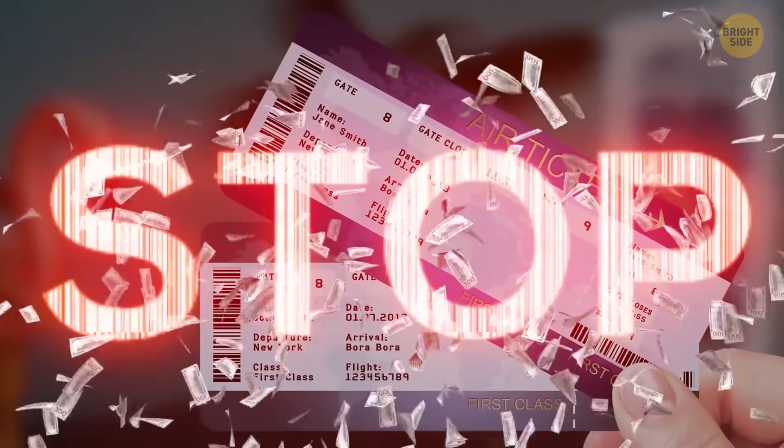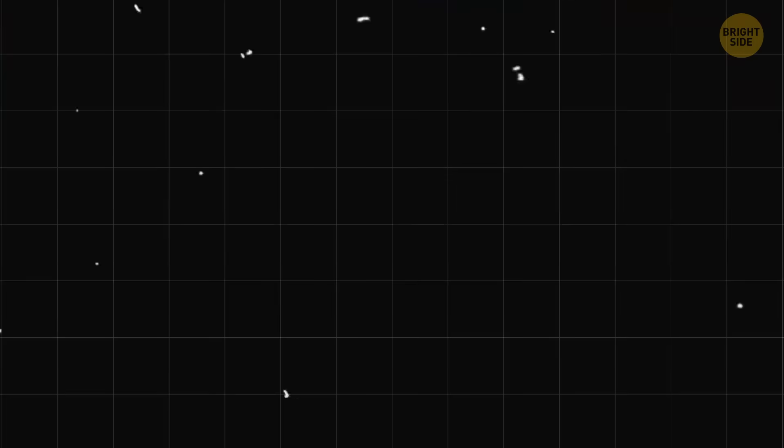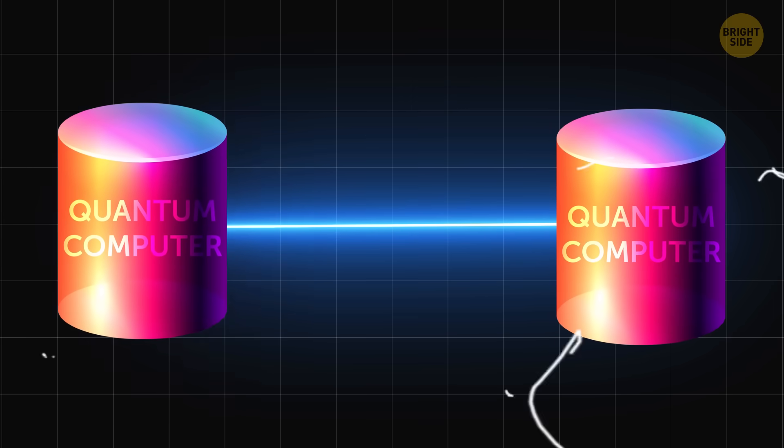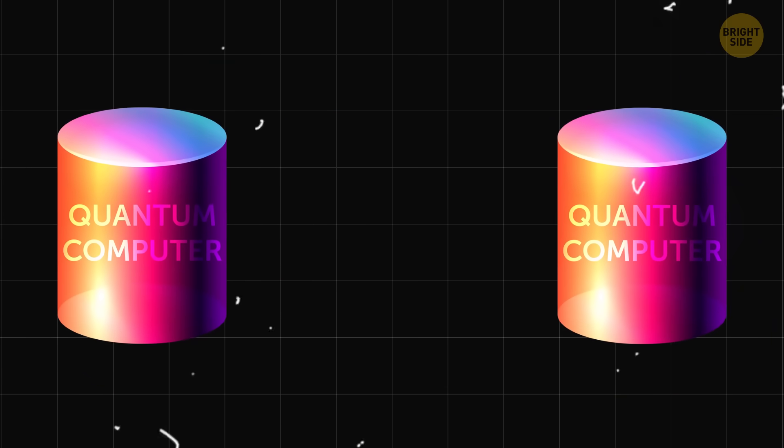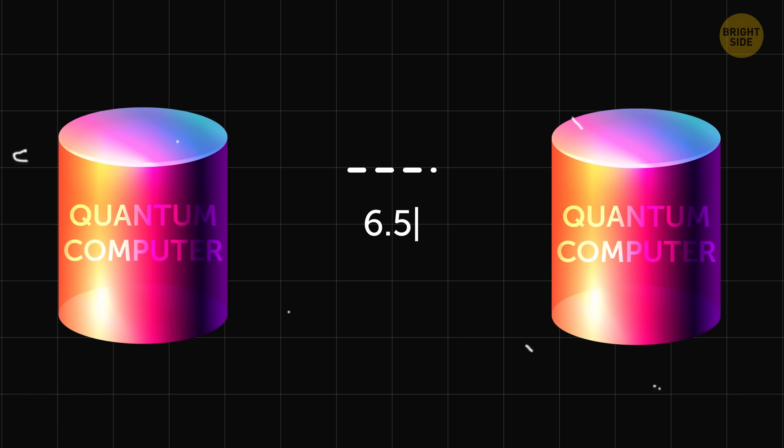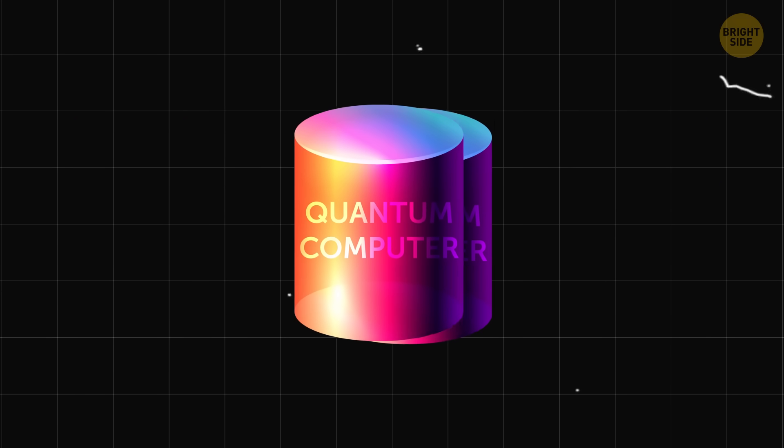But stop. Don't go that far. Scientists have only managed to transfer a piece of quantum information from one quantum computer to another. The distance between them was 6.5 feet, but that piece of information moved as if there was no distance at all.